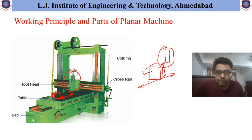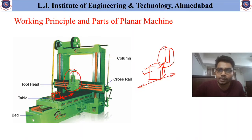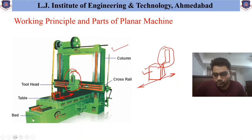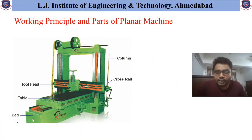Planner Machines are used when the shape and size of the workpiece is comparatively larger, which cannot be accommodated in the Shaper Machine. In the case of the Shaper Machine, smaller workpieces can be handled easily. Whereas if the shape and size of the workpiece is very large, the Planner Machine is used. There are many different types of Planner Machines available, used based on the shape and size of the workpiece.